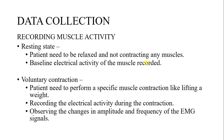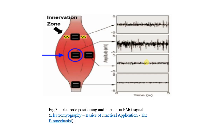The second state is voluntary contraction, in which the patient needs to perform a specific muscle contraction such as lifting a weight so that the muscle contracts. We collect data by recording the electrical activity during the contraction and observing the changes in amplitude and frequency of the EMG signals. Here is a diagram showing how to place an electrode on a muscle to get maximum input.